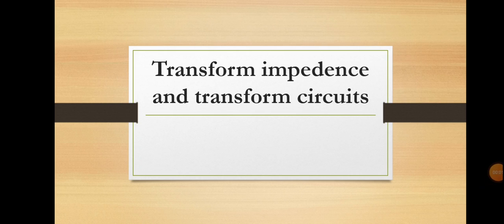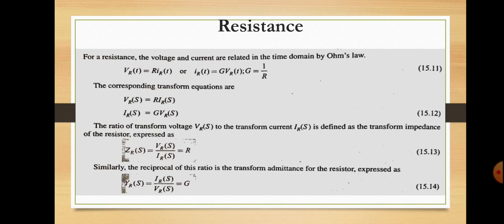In this session we will discuss transform impedance and transform circuits. We will first determine the transform impedance and admittance representation for each of the elements such as resistance, capacitance, and inductance. We will also find the impedance and admittance representation for initial condition sources.